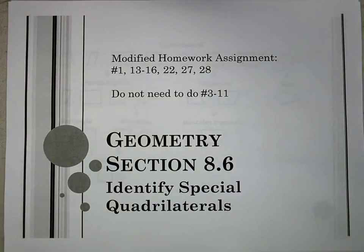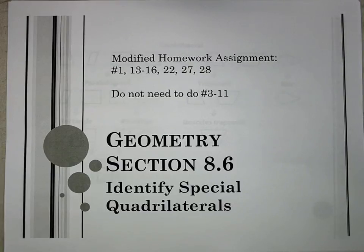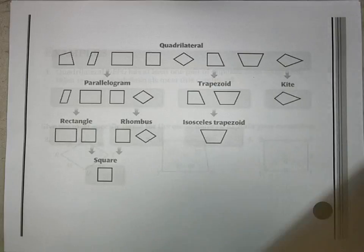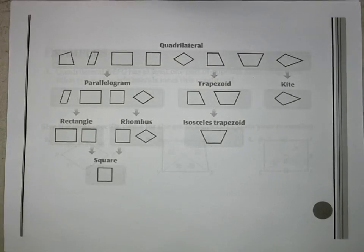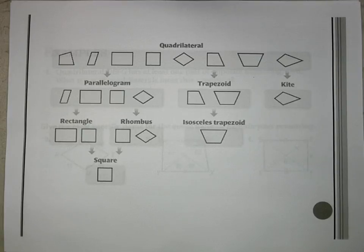In our final section for this chapter, we call it Identifying Special Quadrilaterals, section 8.6. This section doesn't really have any new properties. What it's doing is putting everything together so we can identify what type of shape we have and why, which forces us to utilize the properties we've discussed.